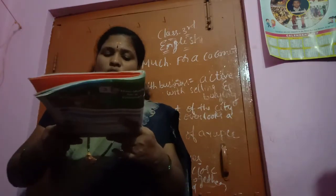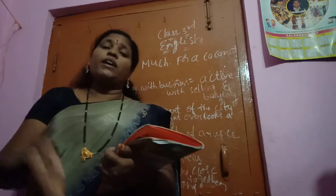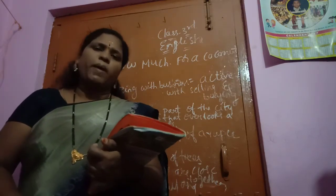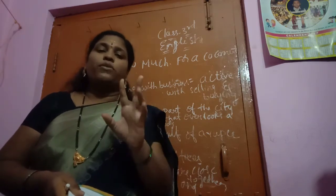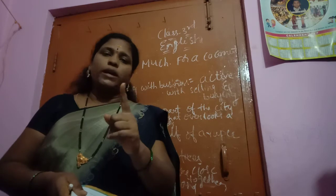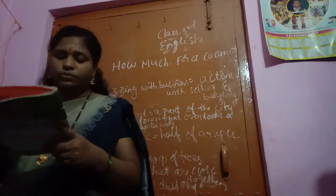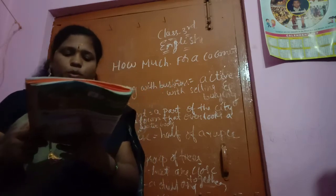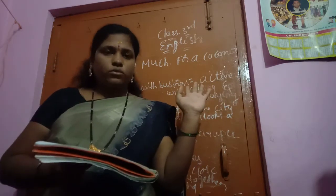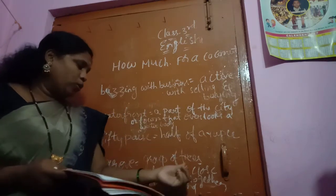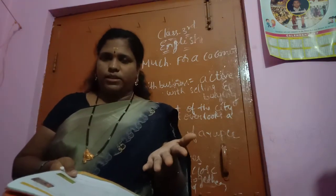Then Bikkubai said, 'I walked so far and you say it is for a rupee — give me it for 50 paisa.' 50 paisa is half a rupee — two 50 paisa make one rupee. The seller said, 'Sorry, if you want a coconut for 50 paisa, go to the grove.' A grove is a group of trees that are close together — like a coconut garden.